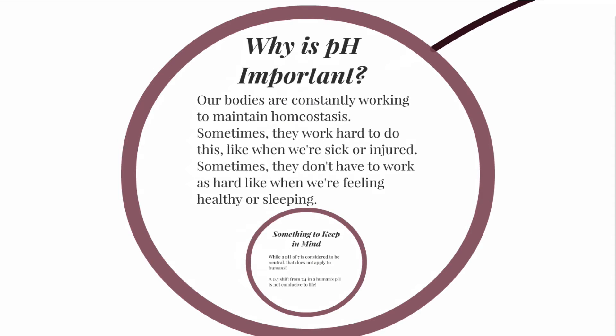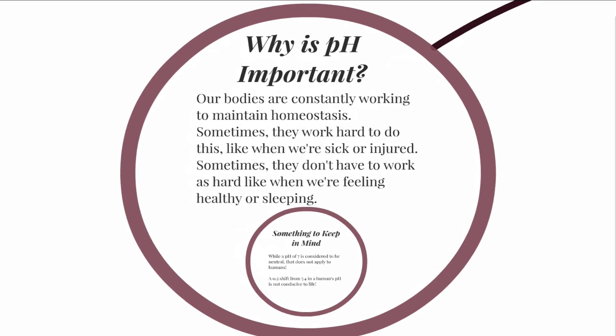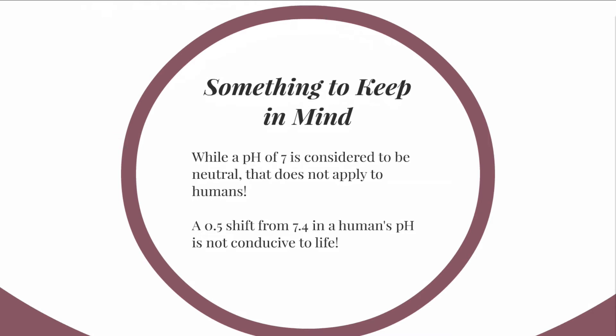Why is pH important? Our bodies are constantly working to maintain something called homeostasis. Homeostasis is just a word that means a normal state. Sometimes our bodies have to work extra hard to maintain that normal state, like when we're sick or injured. And sometimes they don't have to work as hard, like when we're feeling healthy, eating well, sleeping well. Something to keep in mind: while a pH of 7 is considered neutral, that is not normal for humans. A perfect normal human pH is 7.4. A 0.5 shift up or down from 7.4 is not conducive to life.